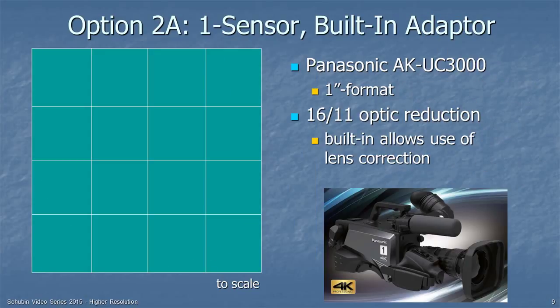Here's a variation on that. Panasonic introduced this using a one-inch format chip instead of a Super 35mm chip. Because it's closer to the two-thirds-inch size — about halfway in between — the reduction is just a 16-to-11 optical reduction, which is much less, so they lose less light. And by having the adapter built into the camera, that allows the use of lens corrections to improve the pictures.